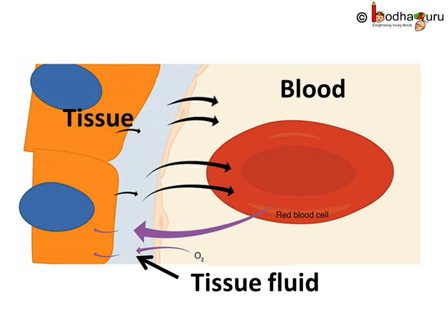Some liquid or plasma part of blood comes out of the blood capillaries because of blood pressure and flows into the tissues — that is, into the spaces between the individual cells. We call it tissue fluid. It is this tissue fluid that delivers nutrients, oxygen, and other chemicals to the cells.